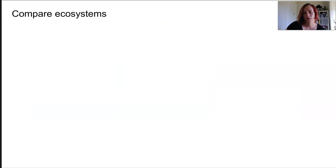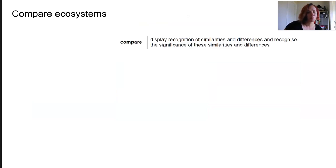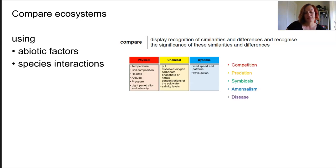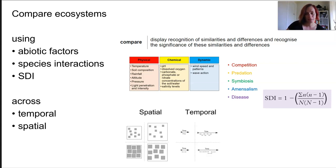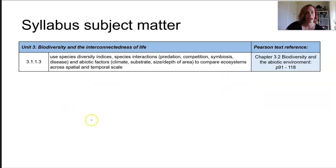If we return to our original statement, what we are aiming to do is compare ecosystems using abiotic factors, species interactions, and SDI. We are doing that in the context of, or across, temporal and spatial scales. Basically, how do these three things change if we continuously sample them either over a time scale or a spatial scale?